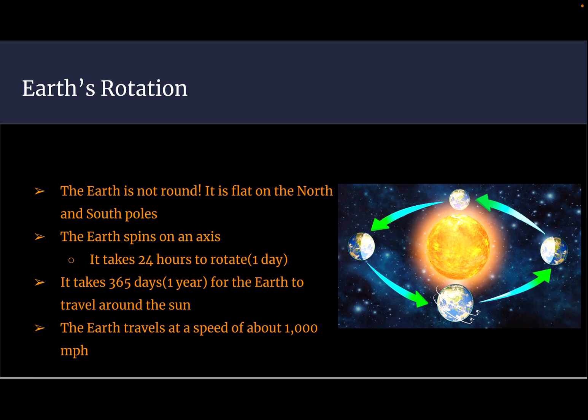The Earth also revolves around the Sun. It takes 365 days, or one year, for the Earth to travel around the Sun. The Earth travels at blazing speeds of about 1,000 miles per hour.